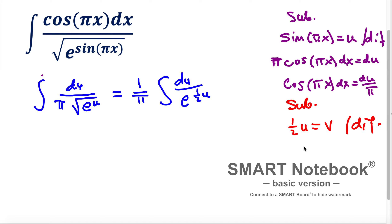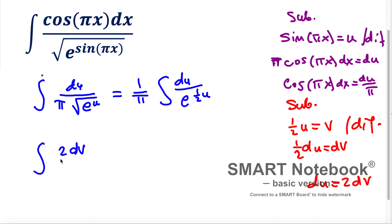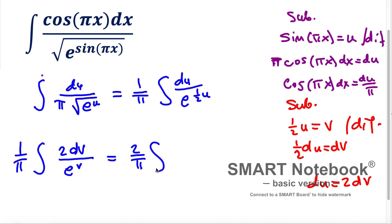Taking the differential of both sides: one-half du equals dv, so du equals two times dv. Now substituting into the integral: instead of du we write two times dv, and the denominator becomes e to the exponent v. Factoring the two in front gives us (2/π) times the integral of e to the exponent negative v, dv.